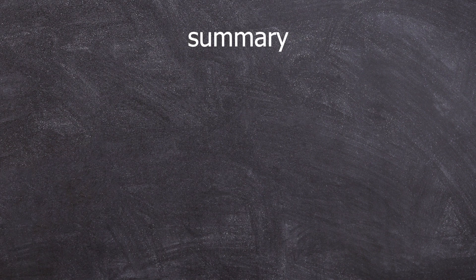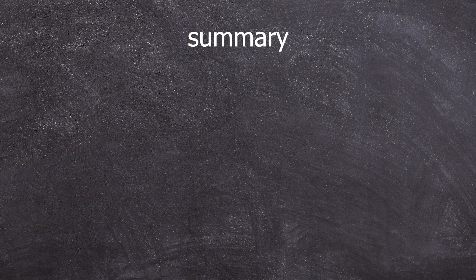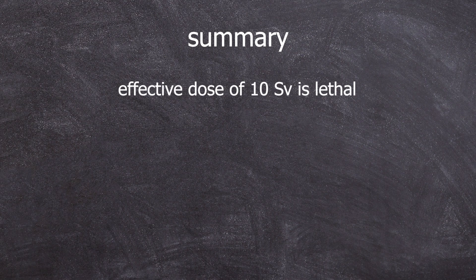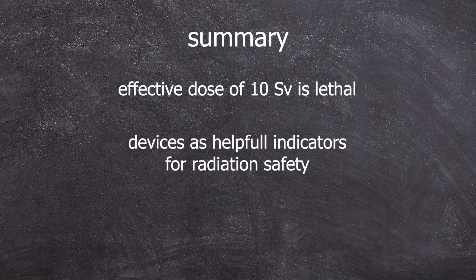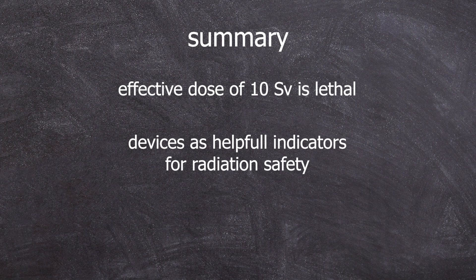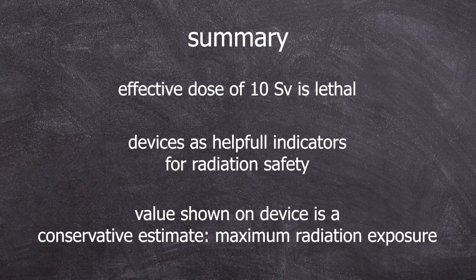As a conclusion, the dose rate always has to be a conservative estimate. What's displayed on the device is the maximum dose a body could receive. Now we can understand the thoughts behind an effective dose and an effective dose of 10 sievert is lethal. Such devices are helpful indicators for estimating the risk of radiation exposure, but calibration is usually very complicated and transferring all the factors behind this effective dose from the measurement that the detector took is very complicated. However, the measurements on the device should always indicate the maximum radiation exposure.